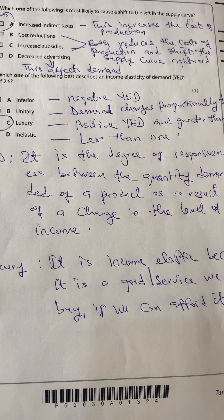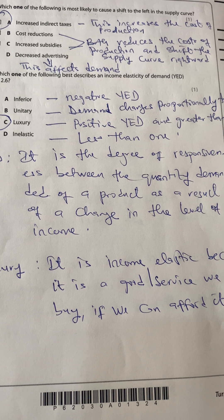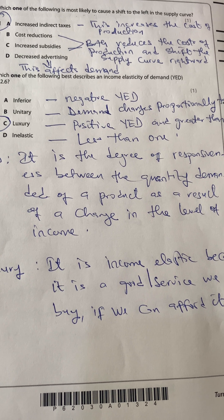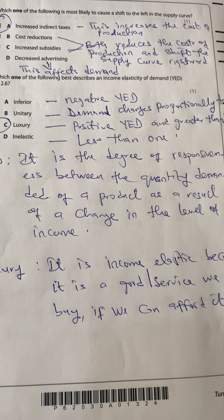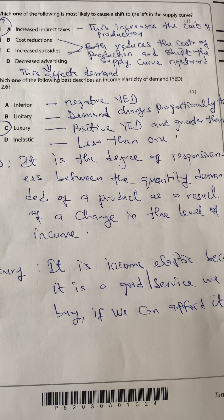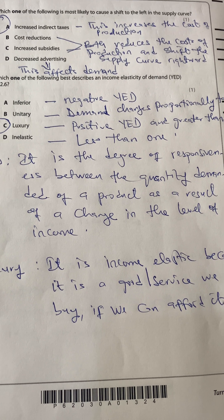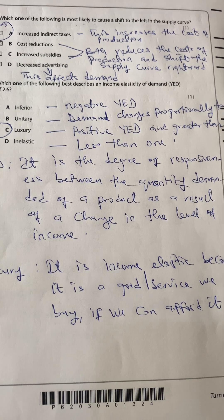Cost reduction will increase supply. Increased subsidy will reduce the cost of production, which will also increase supply and shift the supply curve to the right. Decreased advertisement will affect demand, not supply. So the answer is A — increased indirect taxes.